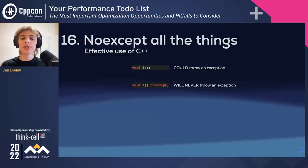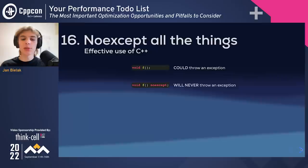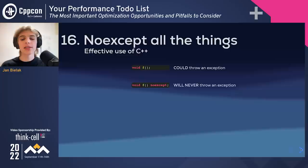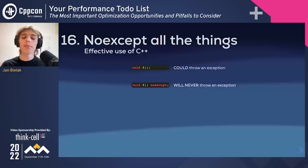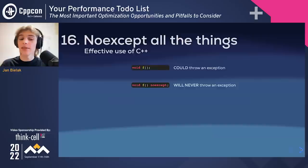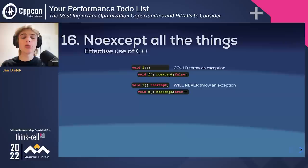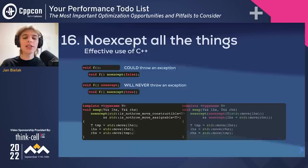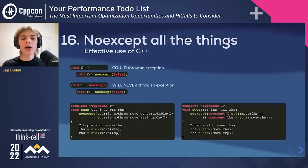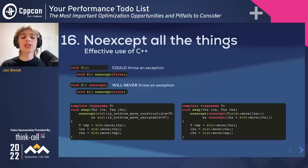Now let's talk about noexcept. This specifier can be applied to a function to say it will never throw exceptions. It's useful both as documentation and as an optimization opportunity for the compiler — knowing a function will never throw allows the compiler to omit exception handling at the function's call sites. Just like with const, a compiler can often figure this out by itself, but it costs only eight characters to make the compiler certain. noexcept can also be made conditional, which is usually used in function templates where noexceptness depends on template parameters. It is especially important to make move constructors and move assignment operators noexcept, because it's common practice to optimize generic code for that scenario.